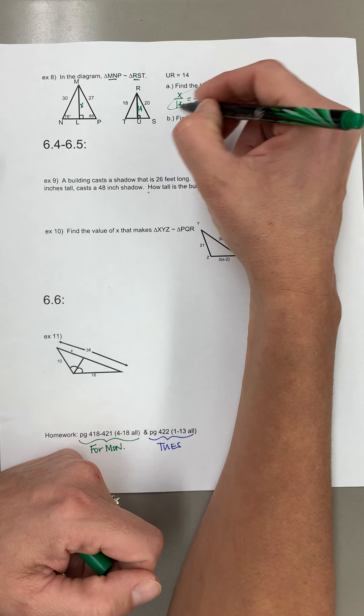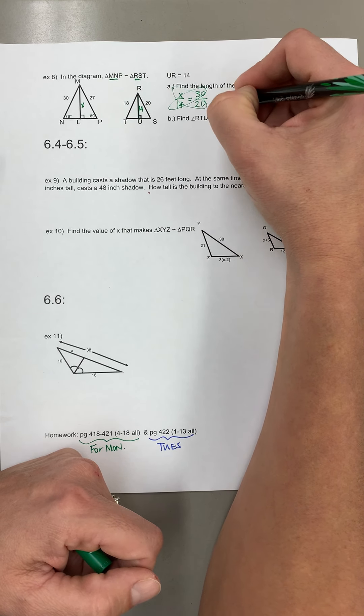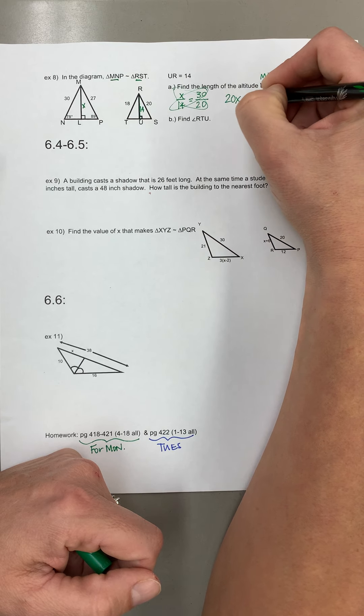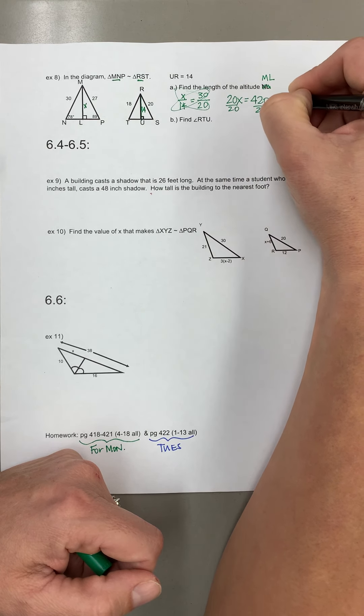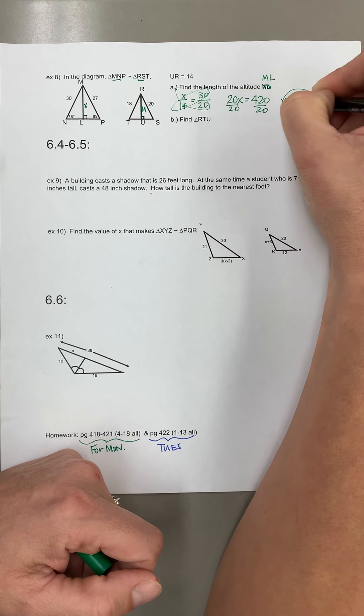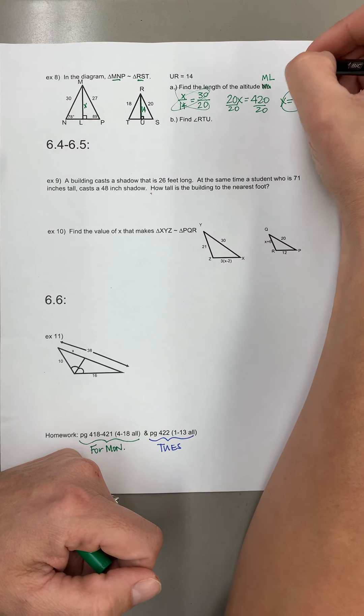So we're gonna cross multiply, set equal, so we find out X is gonna be 21 which is our ML which is the height of this, the altitude.